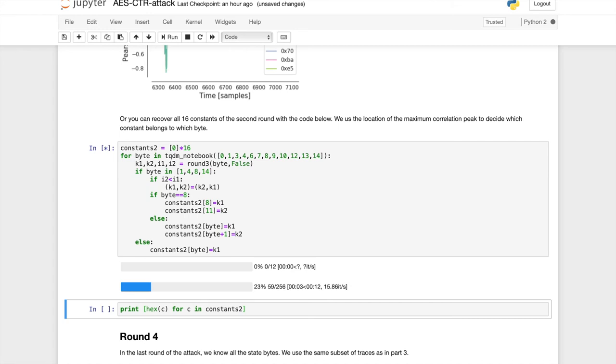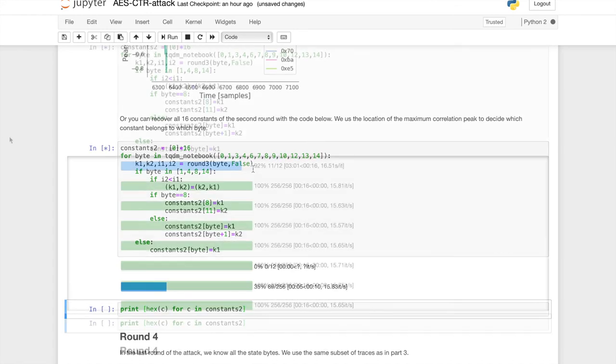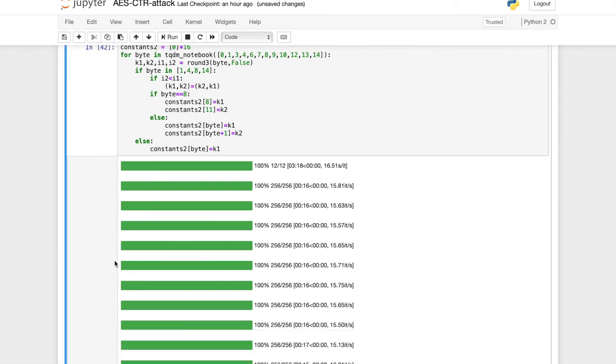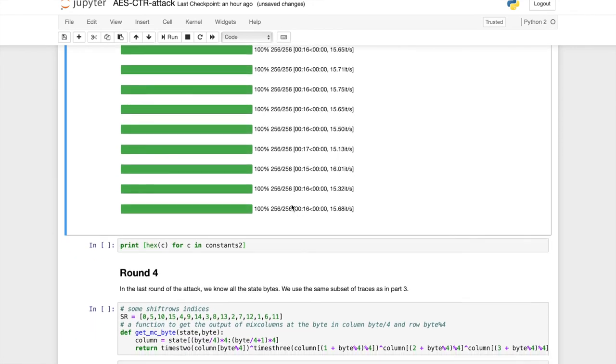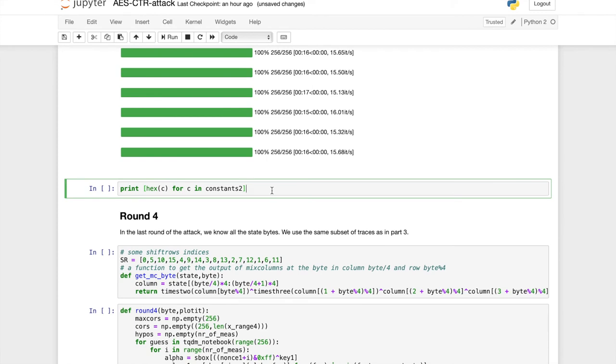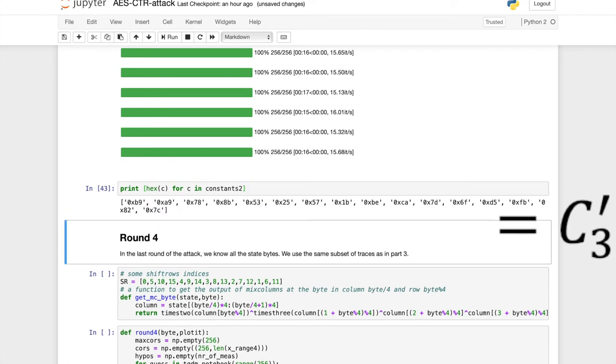So let's now do this to recover all the 16 constants in that round. And I will also skip this part until it's finished. Okay, so now we have recovered all 16 constants, which means that we know we can compute exactly the state at the end of round three.